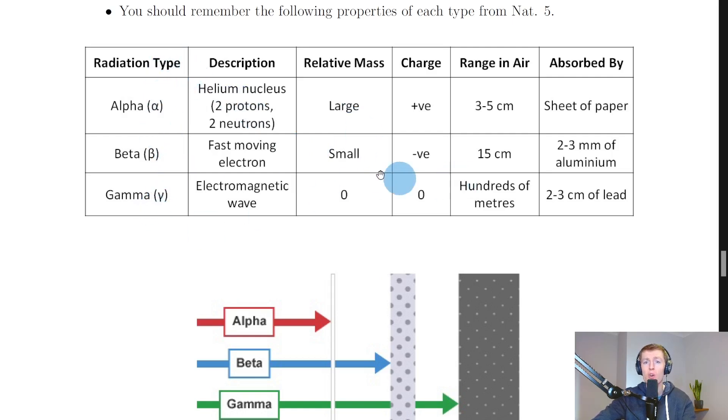We then have charge, where alpha particles are said to have a positive charge because they're made up of two protons and two neutrons. And remember neutrons are neutral, so the only charge here is coming from the positively charged protons. So that means the alpha particle has a positive charge. The beta particles remember are electrons, so they must be negatively charged. And gamma rays have zero charge as well as their zero mass, again because they're waves.